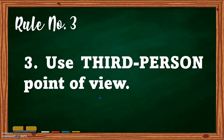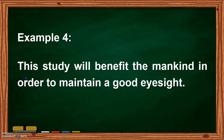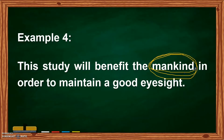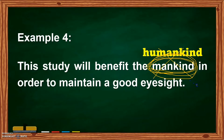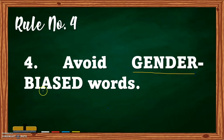Avoid the second person or the first person. Avoid using I, we, you. It should always be the third person point of view. Number four: 'This study will benefit the mankind in order to maintain a good eyesight.' What is wrong in this sentence? We do not use the word 'mankind.' Instead, we say 'humankind.' 'This study will benefit the humankind in order to maintain a good eyesight.' Rule number four: avoid gender bias words. We cannot use 'mankind,' 'womankind,' 'girls,' or 'boys.' We should use general words.